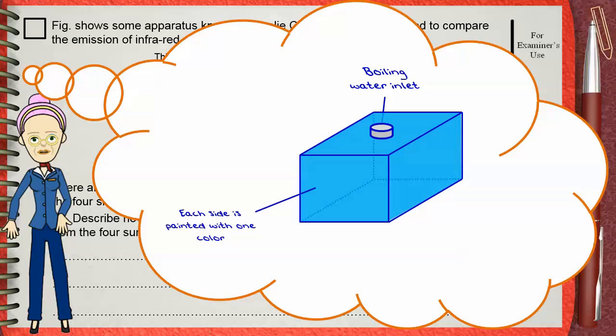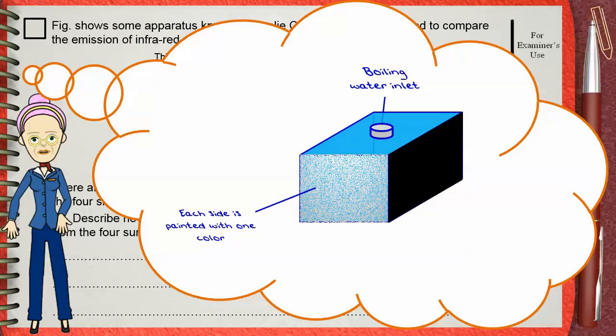Each side of the four sides of the Leslie Cube will be painted with different colors. This side is black. This side is painted silvery. You can paint the other two sides with two other different colors, white and gray, for example.